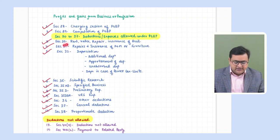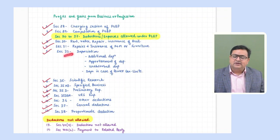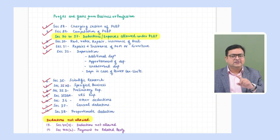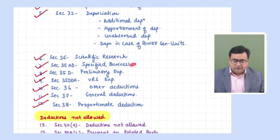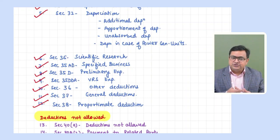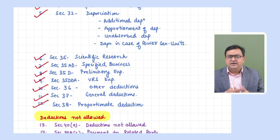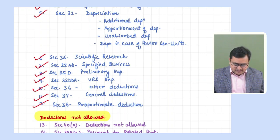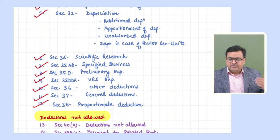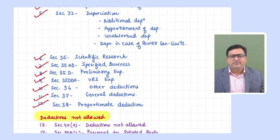Section 30 relates to building; 31 is plant, machinery, furniture — repairs and insurance expenses; 32 is depreciation; 35 is scientific research — outside research not allowed in the default scheme, in-house research is allowed under both schemes; 35AD specified business only for the optional regime; 35D preliminary expenses and VRS expenses — one-fifth. Section 36 covers other deductions: bonus, commission, health insurance premium not paid in cash, bad debts, employer contribution to approved or statutory funds. Unrecognized fund is not allowed. Recovery of bad debts under Section 41 is income; provision for bad debts is not allowed.